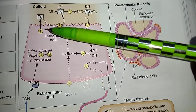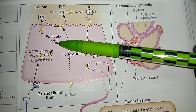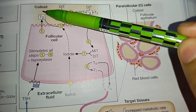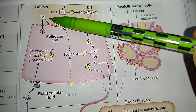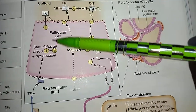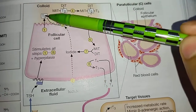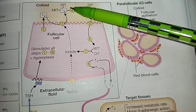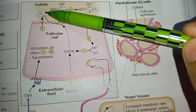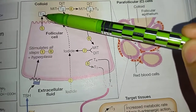The first step is that the follicular cell will synthesize thyroglobulin. This thyroglobulin is synthesized by the follicular cell and released into the colloid, where it waits for the iodine molecule to come.